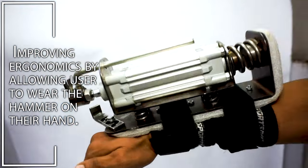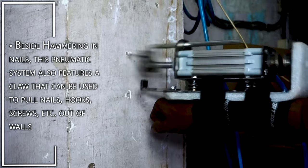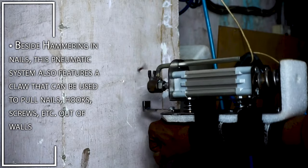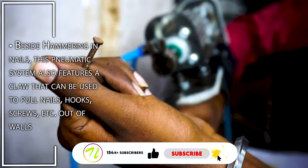Besides hammering in nails, this pneumatic system also features a claw that can be used to pull nails, hooks, screws, etc. out of walls.